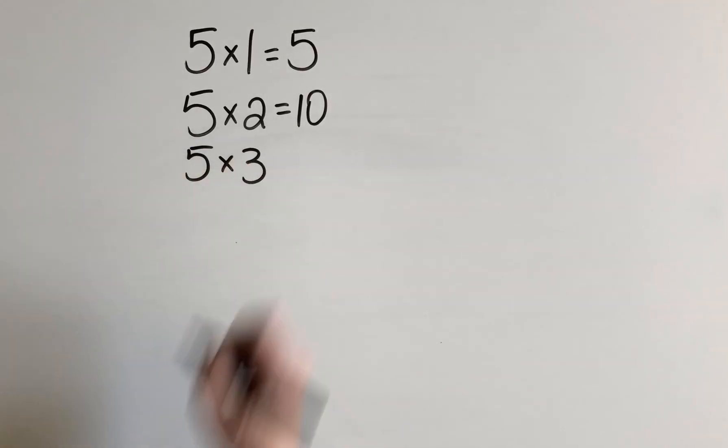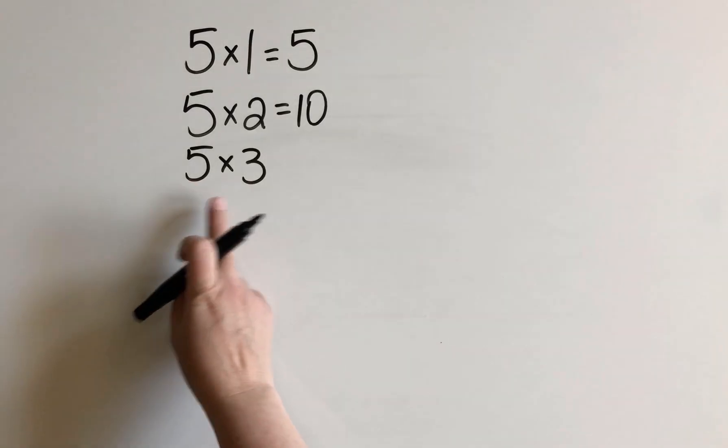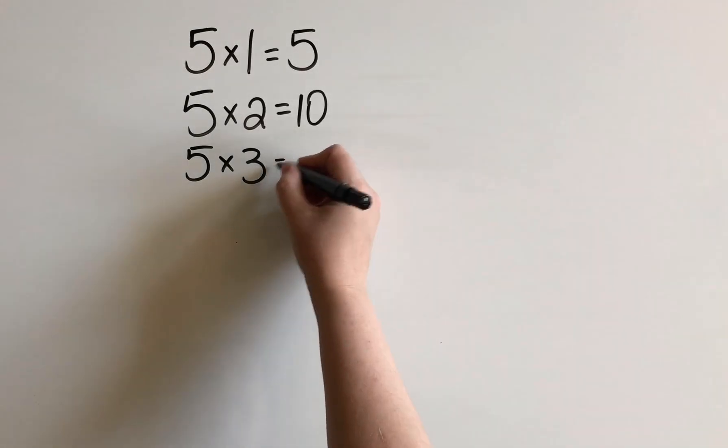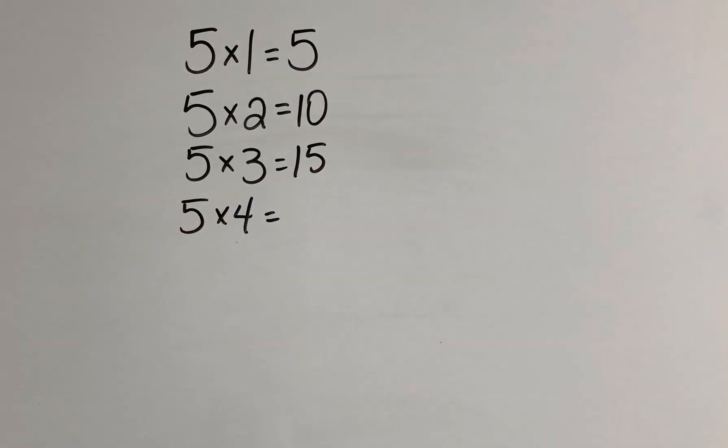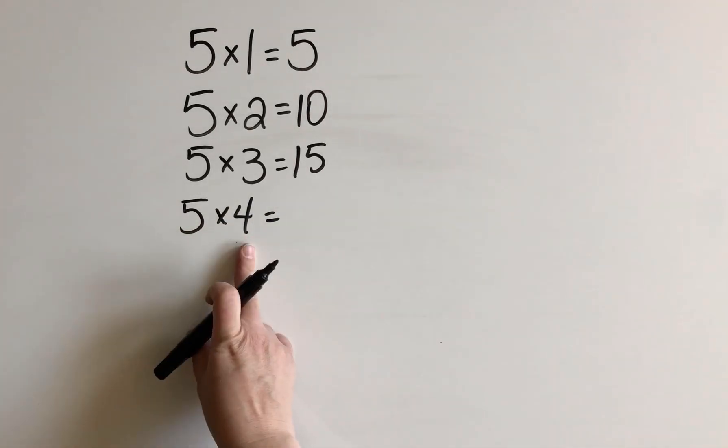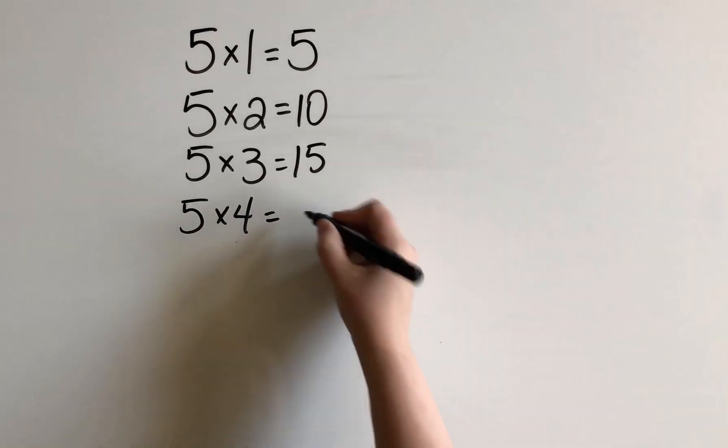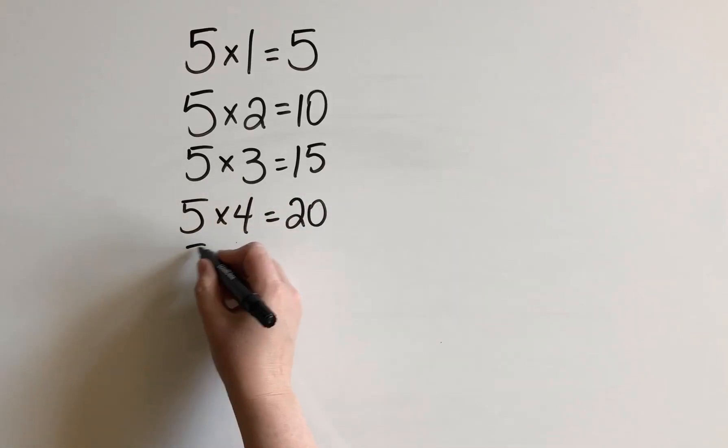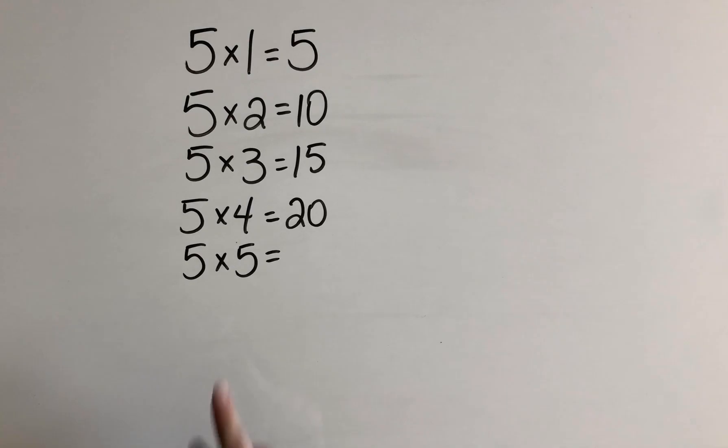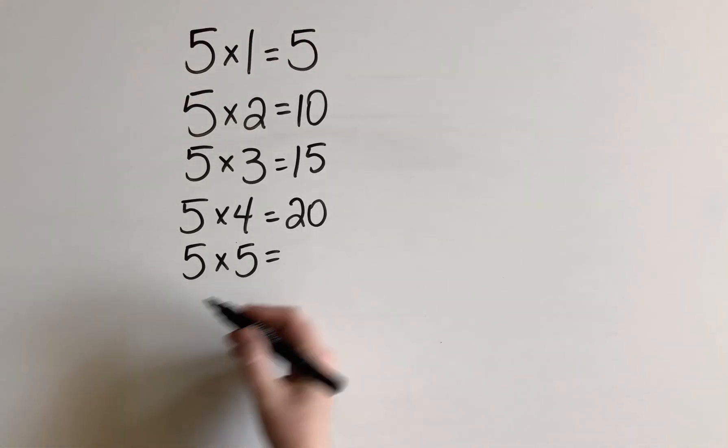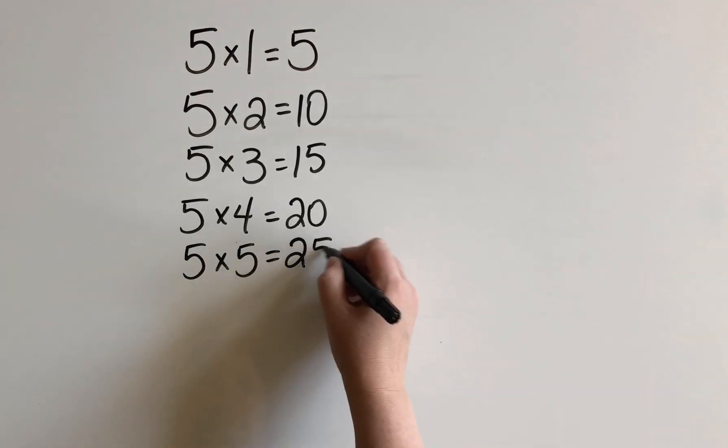For 5 times 3, we could do 10 times 3 to give us 30. And half of that gives us 15. 5 times 4. 10 times 4 is 40. And half of that is 20. 5 times 5. We could start with 10 times 5 to give us 50. And half of that gives us 25.